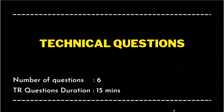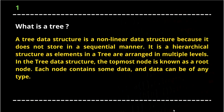The first question: what is a tree? A tree data structure is a nonlinear data structure because it does not store in a sequential manner. It is a hierarchical structure, as elements in a tree are arranged in multiple levels. The topmost node is known as the root node. Each node contains some data and the data can be of any type.